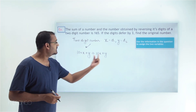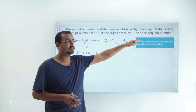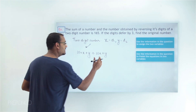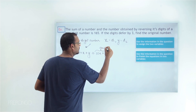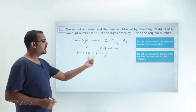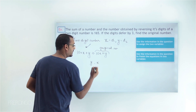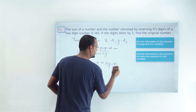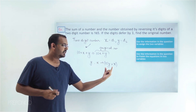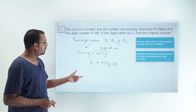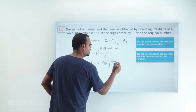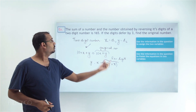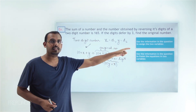The sum of this number and the number obtained by reversing its digits is 165. We can use this piece of information to form a linear equation. This is the original number: 10x plus y. Now if I reverse the digits, making them y and x, I get the reversed number as 10y plus x. For example, if this was 34, reversing the digits gives 43. Now I have both the original number and the number with reversed digits.